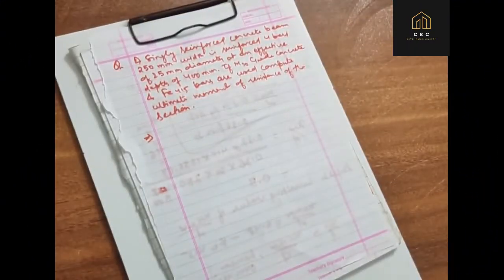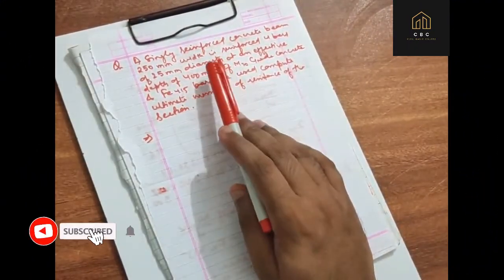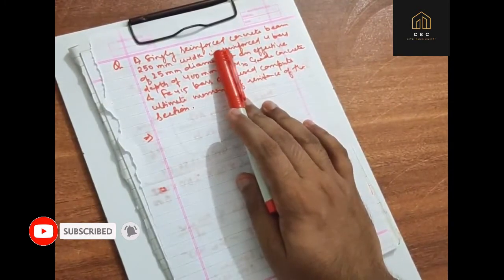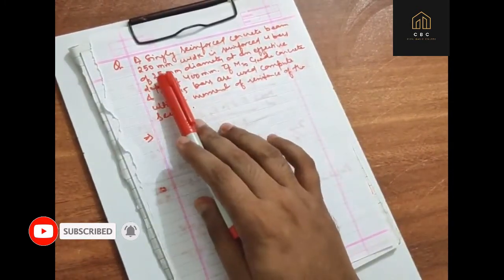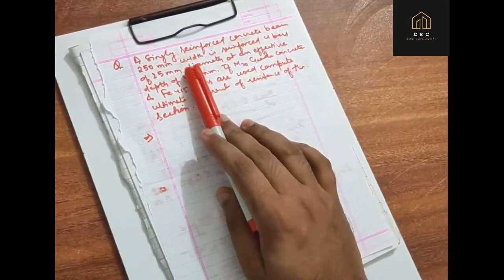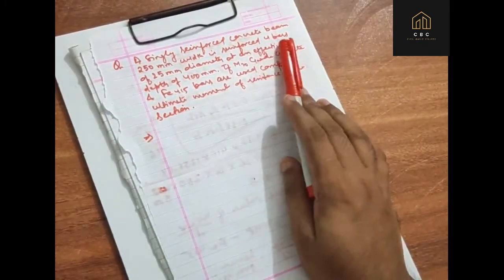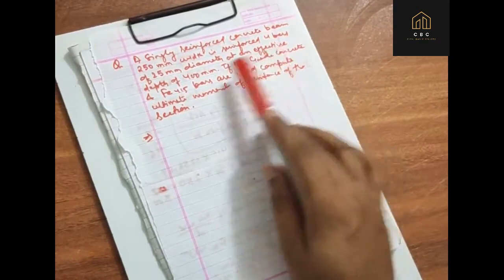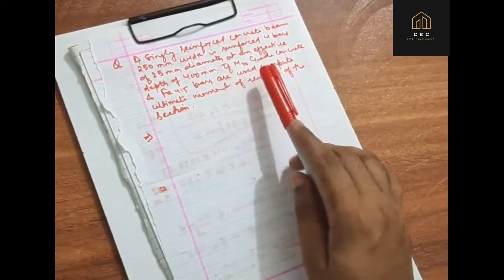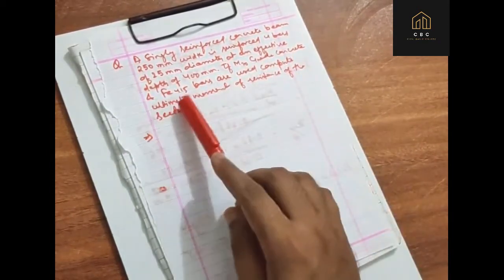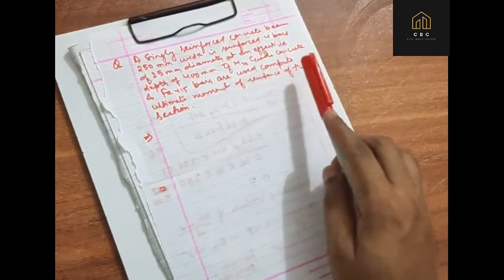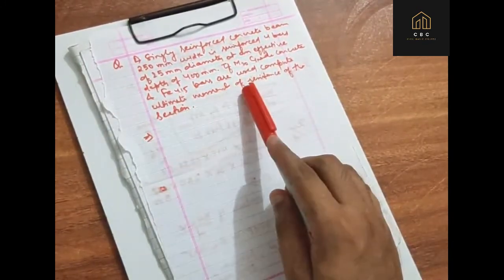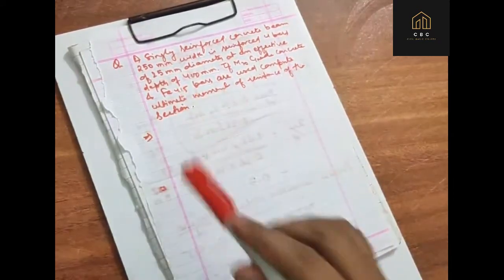Hello friends and welcome to the Civil Basic course. Today we are talking about a singly reinforced concrete beam of 250 mm width reinforced with 4 bars of 25 mm diameter at an effective depth of 400 mm. If M20 grade concrete and Fe415 bars are used, compute the ultimate moment of resistance of the section.